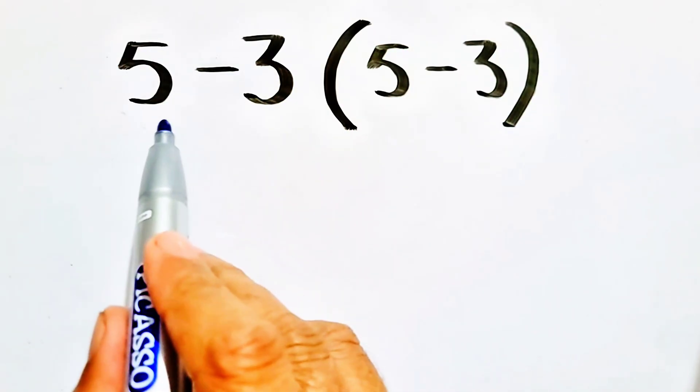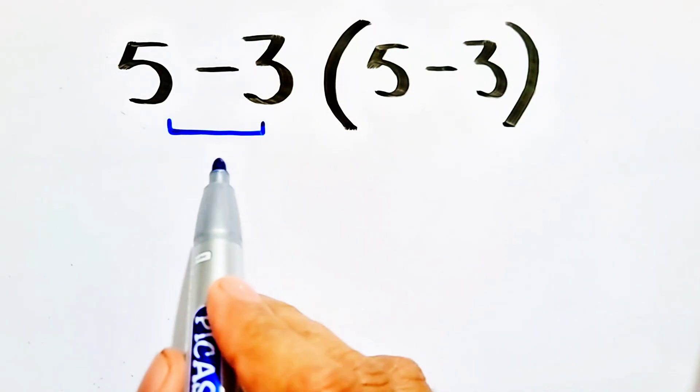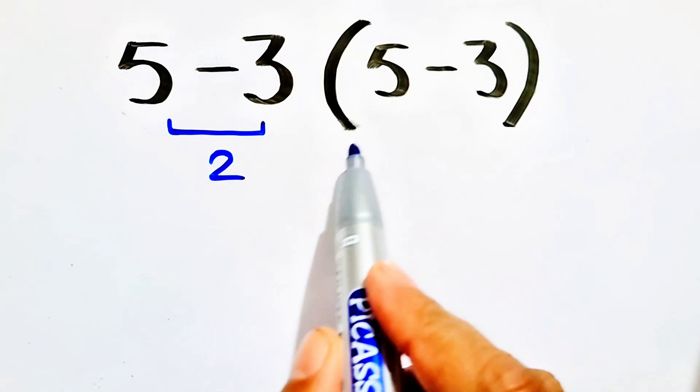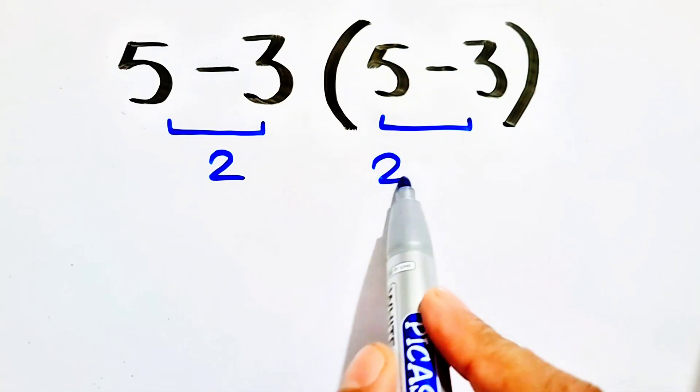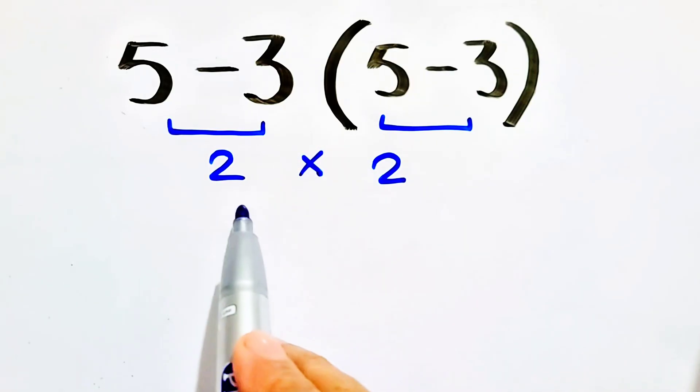Look at this question. 5 minus 3 will be equal to 2, and 5 minus 3 is 2. 2 times 2 will be equal to 4. 4 will be our answer.